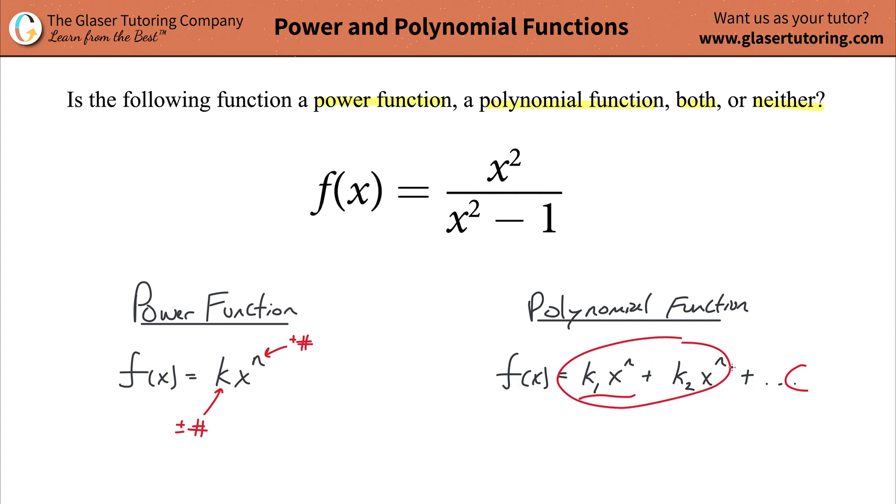Or we could have two of them with a constant, or we don't even need the constant. It could just be this. So actually, a power function could be a polynomial function if it, that would be considered a monomial.